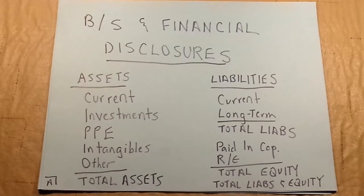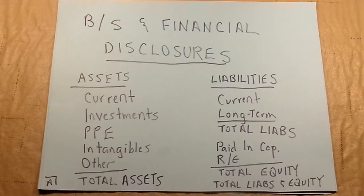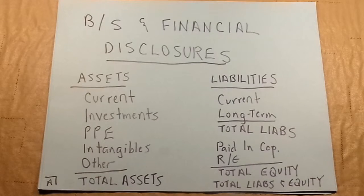Total assets on the left are identical to total liabilities and equity on the right — those amounts must agree. By doing this classified balance sheet, we'll be able to do ratio analysis that we really could not do if we hadn't broken the assets and liabilities into current and long-term portions.